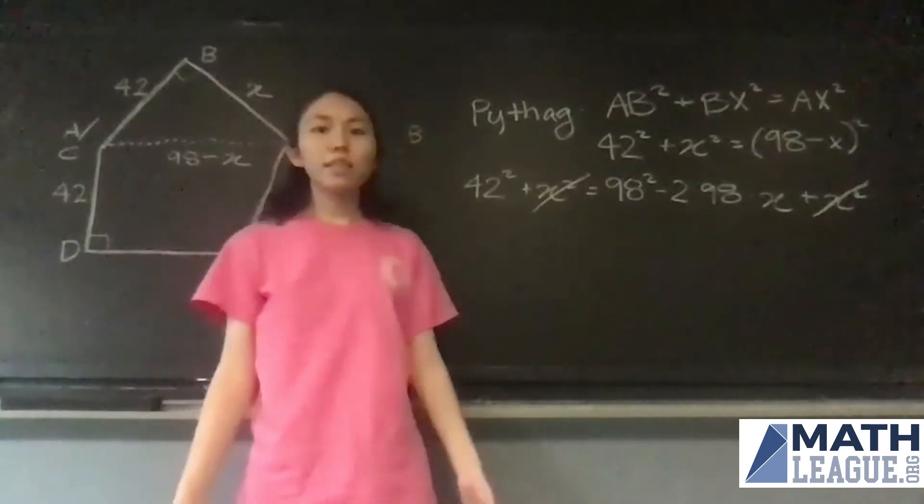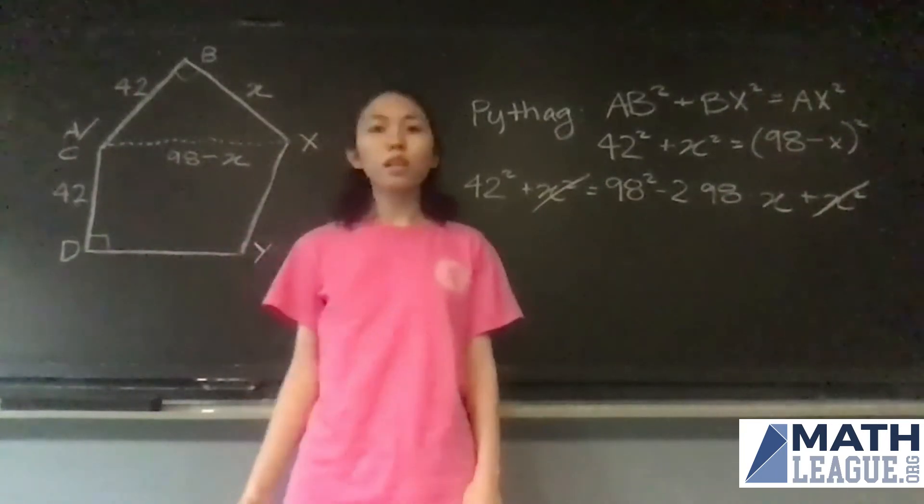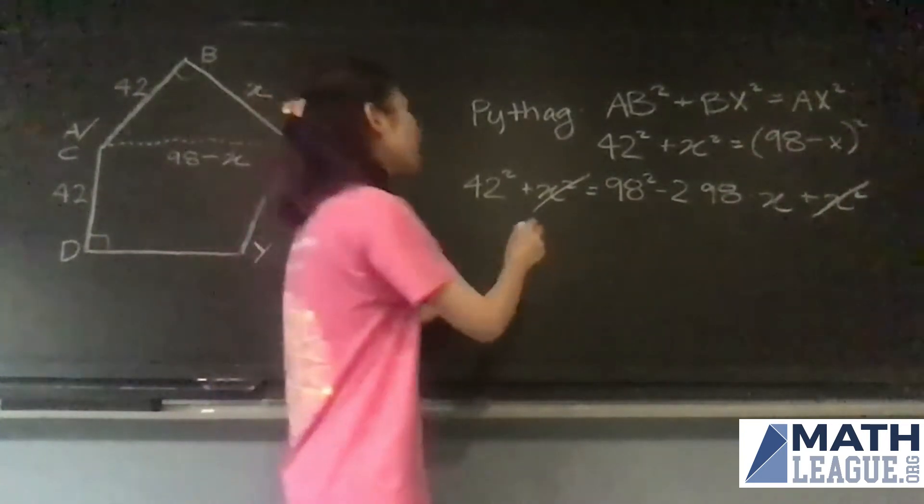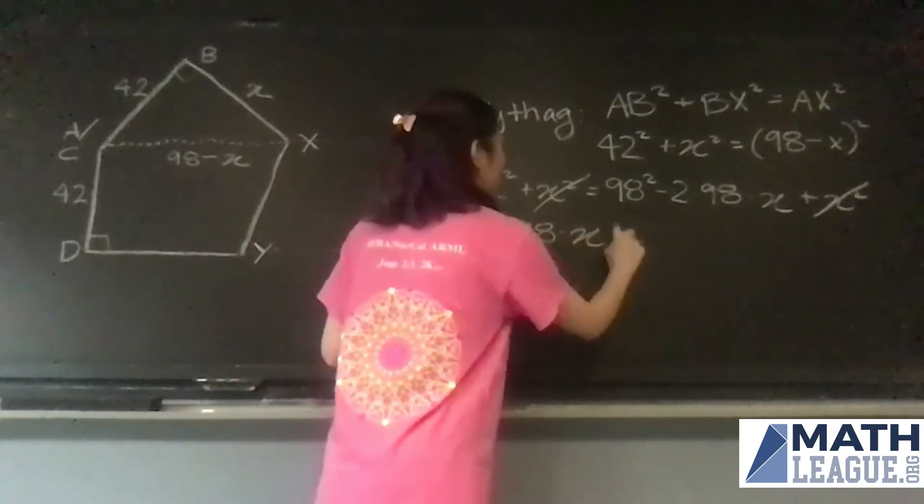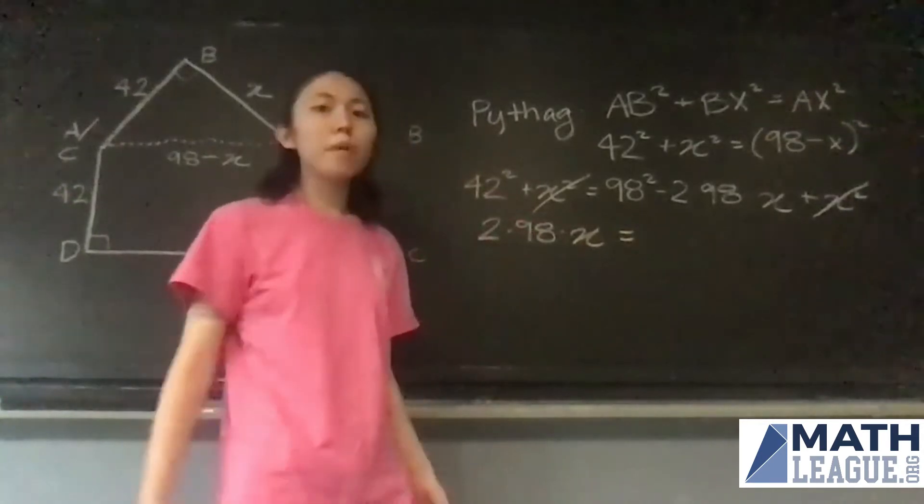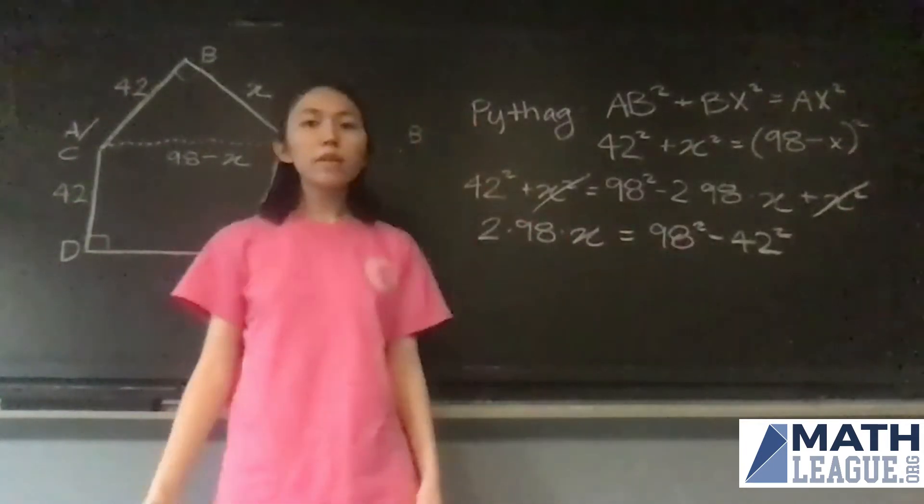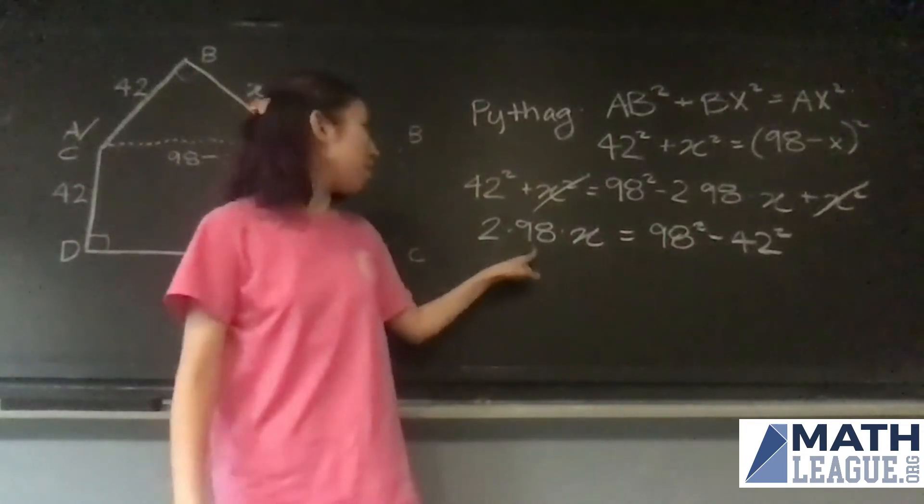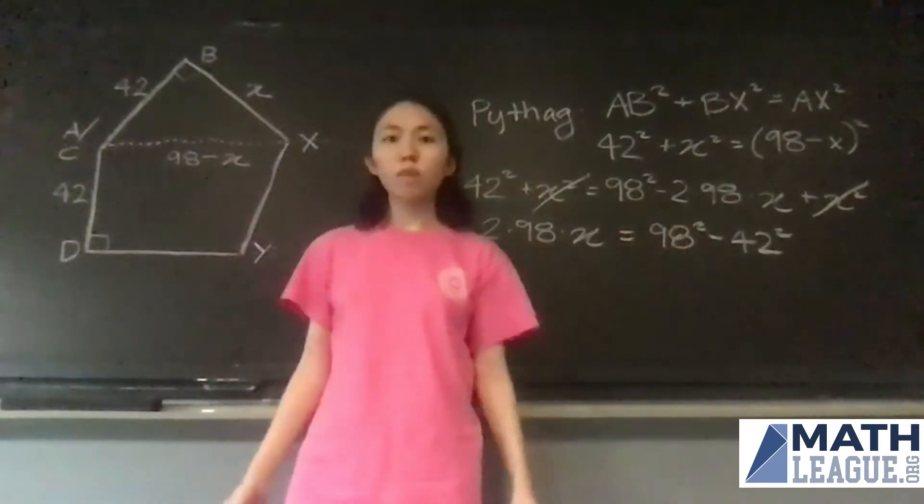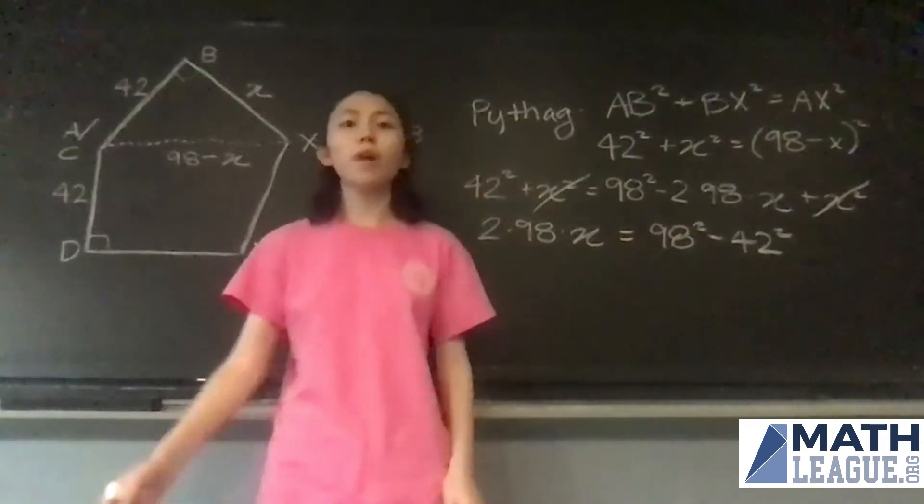Now let's move our X's all to one side and have the constants on the other. So we have that 2 times 98 times X is equal to 98 squared minus 42 squared. Now let's see what factors we can cancel out. We can see that we have a bunch of sevens in common from both sides as well as this two. So let's go through and prime factorize everything.